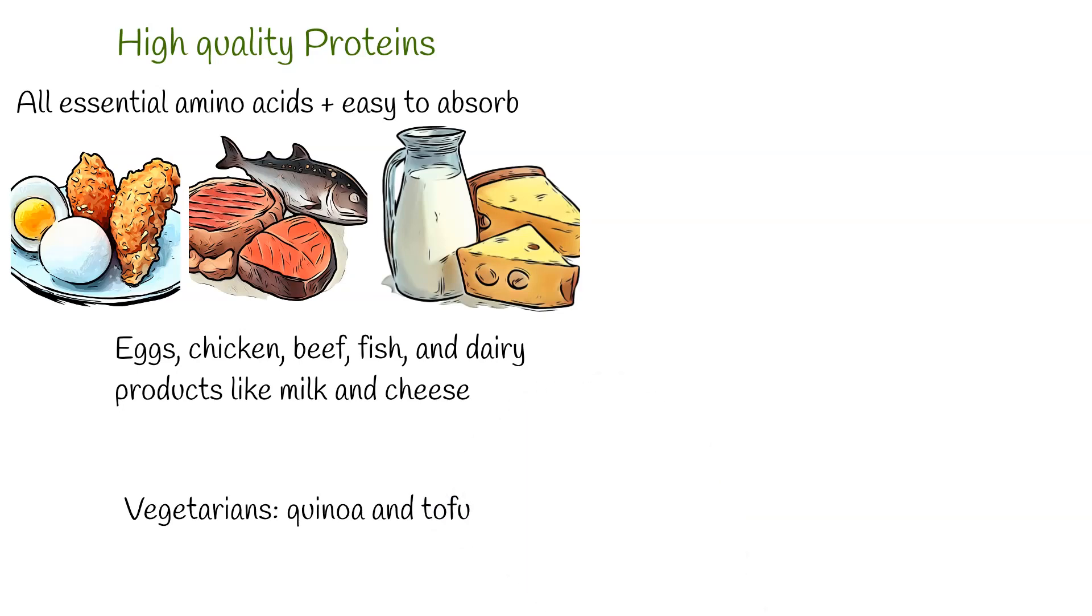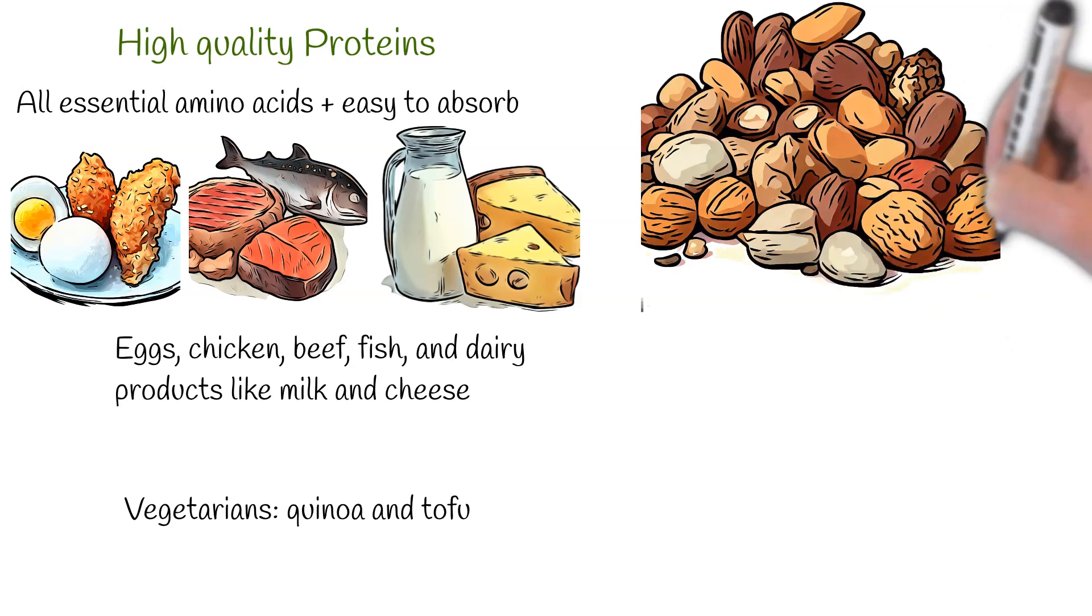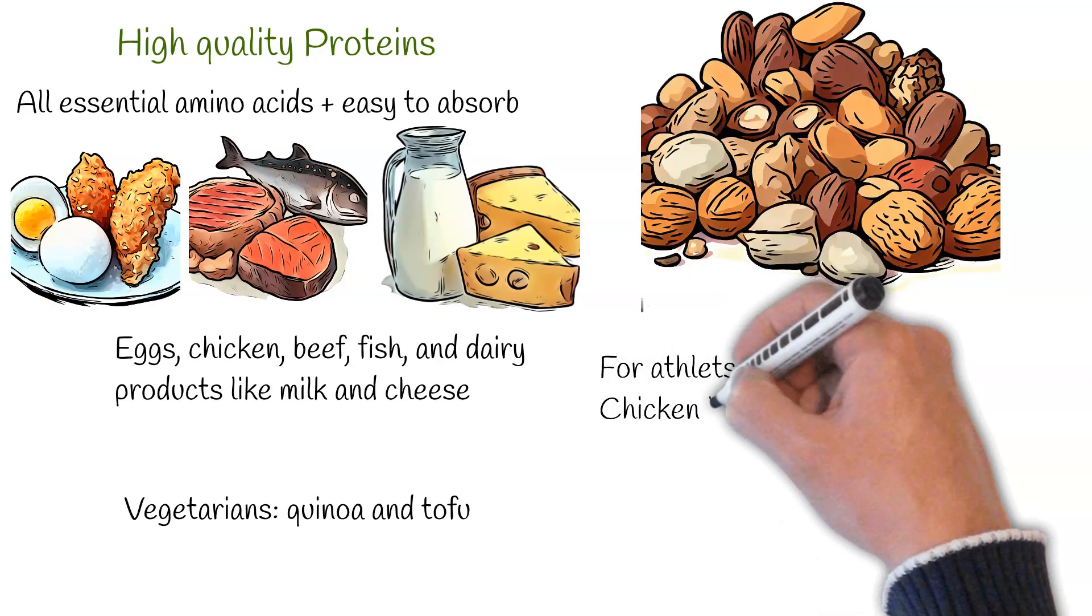Conversely, proteins considered of lower quality, such as those from certain nuts, seeds, and grains, may provide amino acids but not a complete profile. Their absorption rates can also be hindered due to their high dietary fiber content.